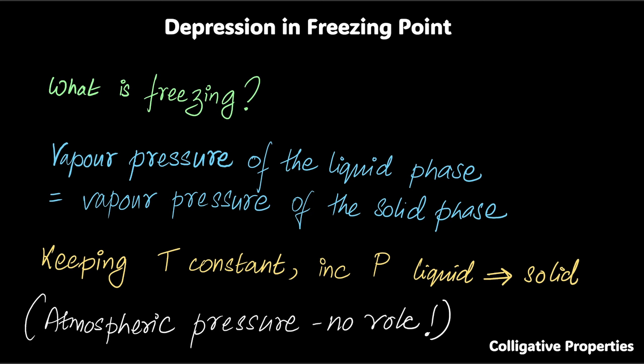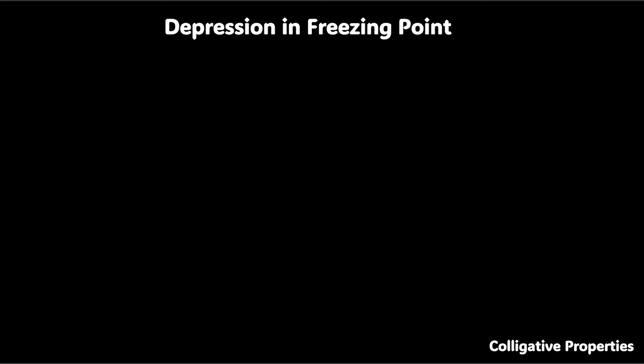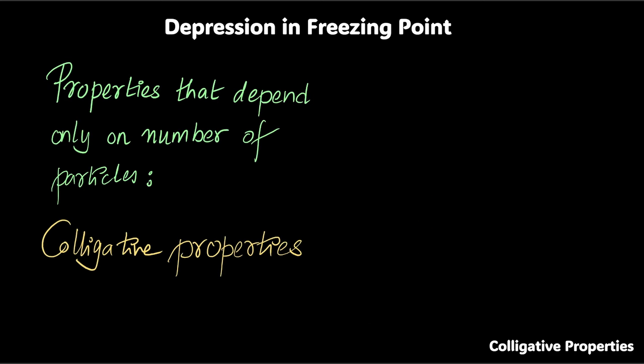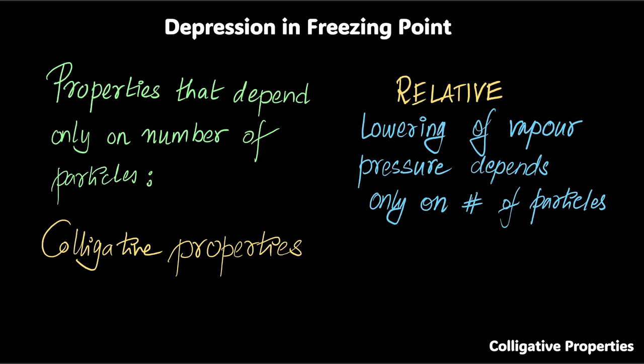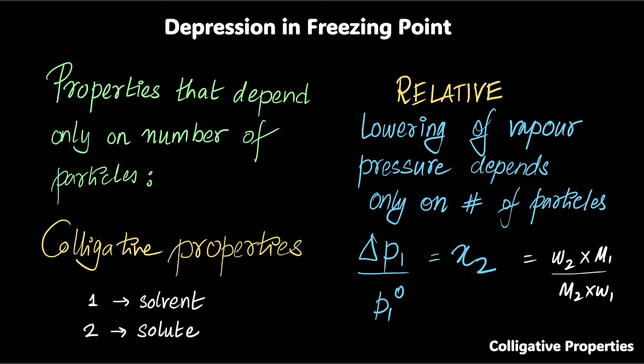Before we go forward, a couple of things that you need to keep in mind. Properties that depend only on number of particles are known as colligative properties, and the first colligative property that we look at is relative lowering of vapor pressure that only depends on the number of particles, because this is the cause of all the other colligative properties. So, if you are not familiar with this, my suggestion is to go check out the video on this. One is solvent, two is solute. I'm going to keep using this thing over and over again.